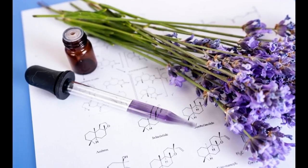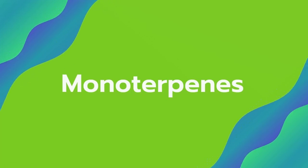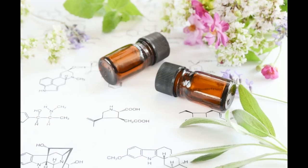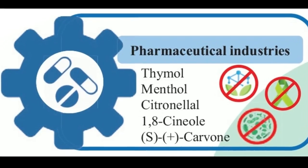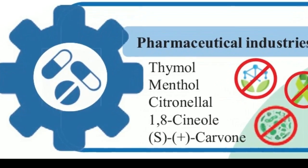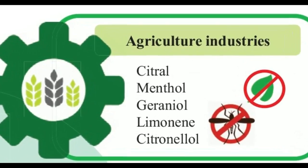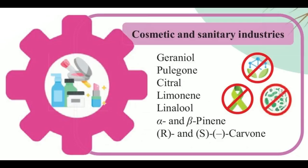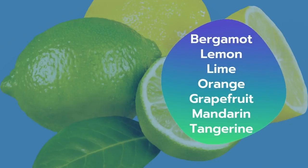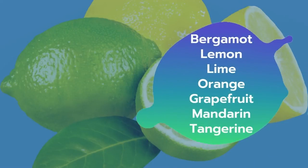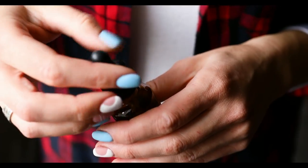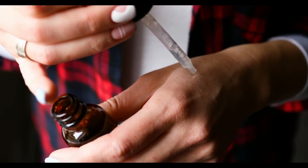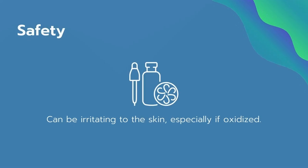Let's look now at monoterpenes. Monoterpenes are found in most essential oils and are composed of 10 carbon atoms and two isoprene units. Monoterpenes can help to rebalance malfunction in the cellular memory as well as unify the other molecules contained in an essential oil. Around 90% of citrus oils contain limonene, which has the ability to kill viruses, and although there is a potential skin irritant risk with monoterpenes, they have so many positive abilities.